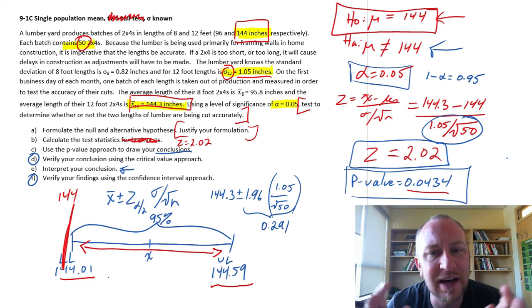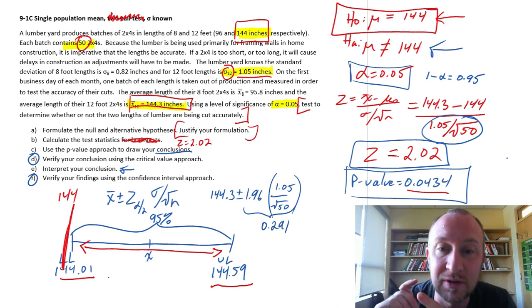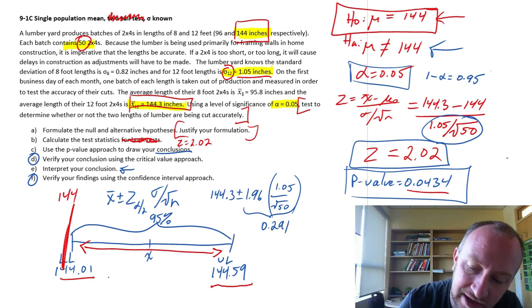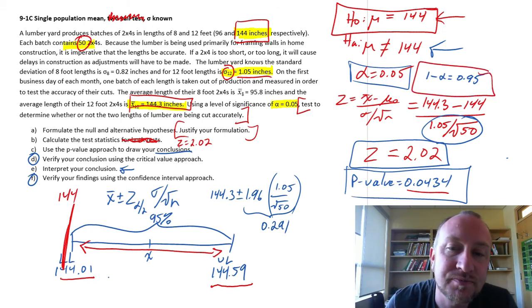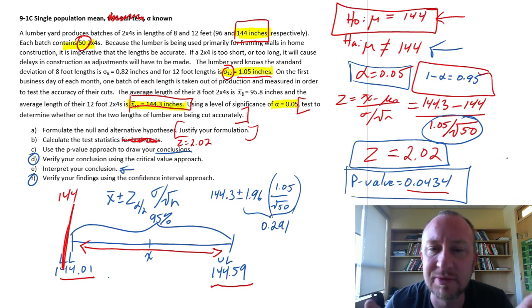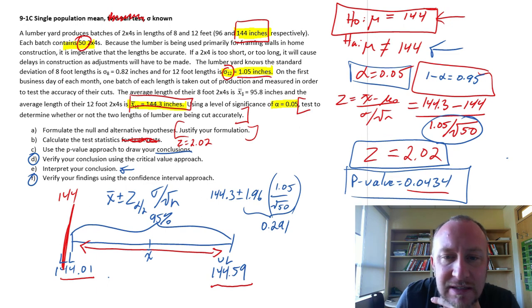Our results are all consistent. And they always will be when you're comparing a confidence interval with a two-tailed test at a comparable level of significance or confidence level. I hope that that was helpful. Thank you for watching, and we'll start making some more videos here. Bye-bye.